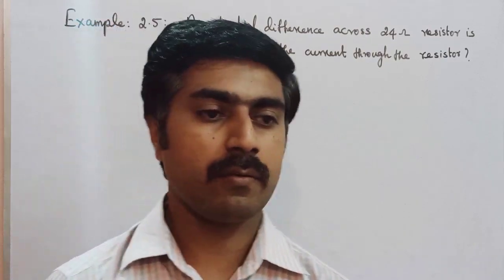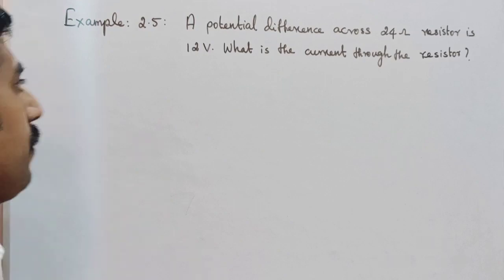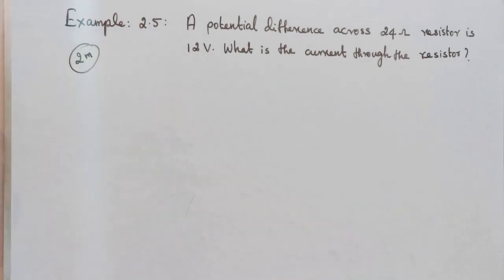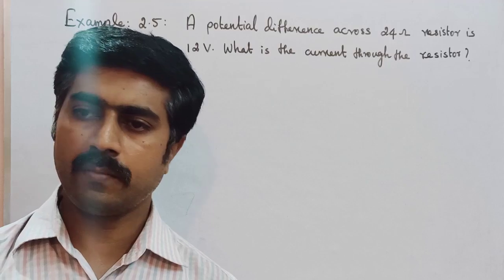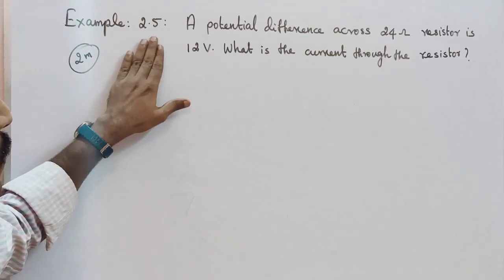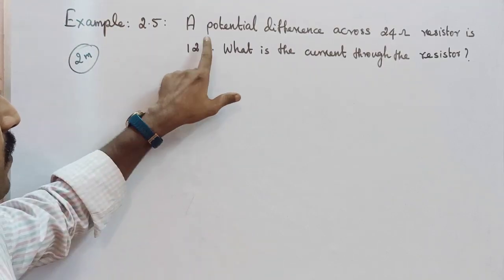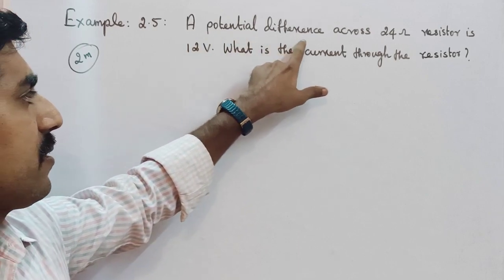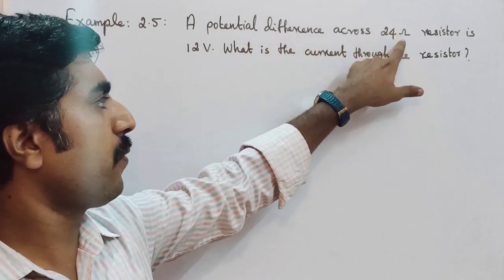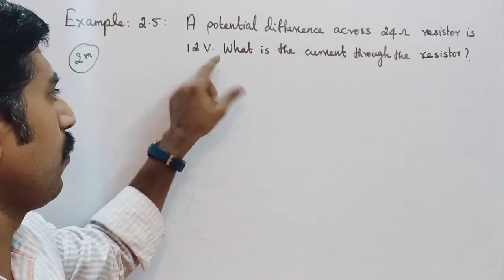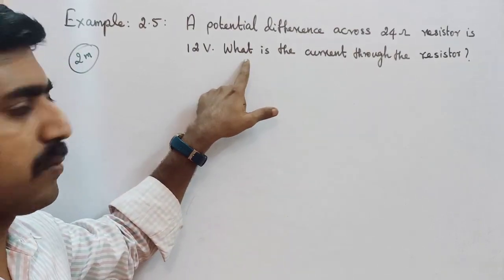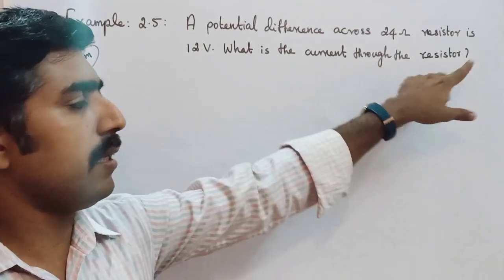2nd lesson is an important problem. So maybe in 2 mark or in 3 mark. Example 2.5: A potential difference across 24 ohm resistor is 12 volt. Right. Then the question is what is the current through the resistor?